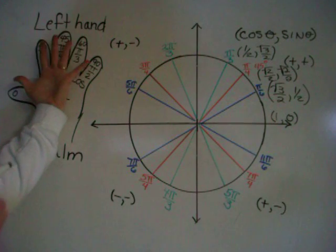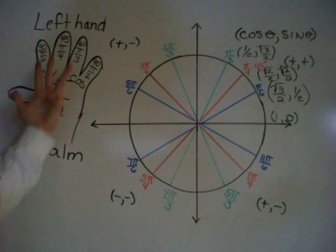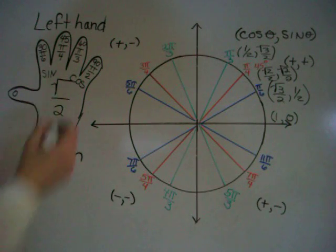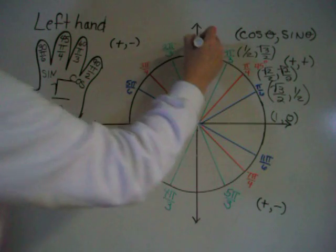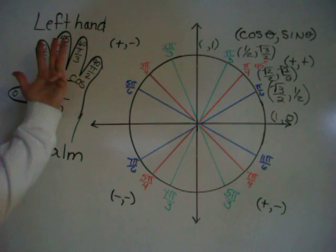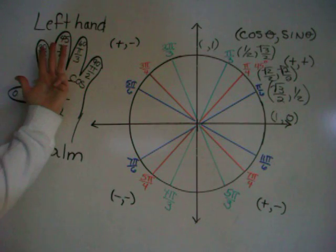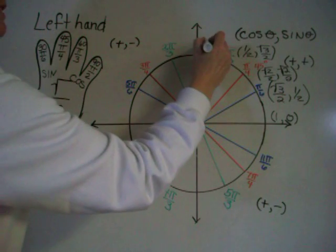For a 90 degree angle, I put down my last finger, and I count the digits on the sine side. On the other side, there are 4. Square root of 4 over 2 is 1. So the sine is 1. Cosine, on this side, there are no digits over here on the cosine side. So we have 0 divided by 2, which is 0.